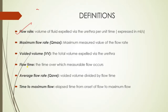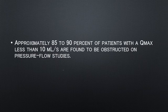Flow rate is the volume of urine being expelled. Q-max is the most important parameter. Voided volume is the total amount of urine the patient voided during micturition. Other parameters include flow time, average flow, and time to maximum flow. The most important parameter to help diagnose the underlying etiology is the Q-max.